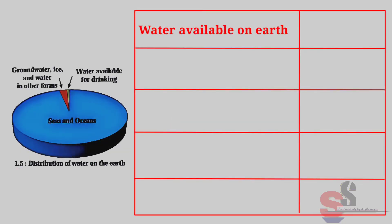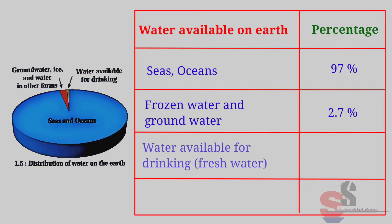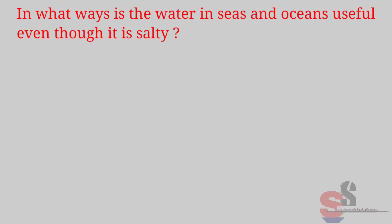Observe and discuss — Water available on earth by percentage: Seas and Oceans — 97%. Frozen water and ground water — 2.7%. Fresh water available for drinking — 0.3%. Total: 100%.